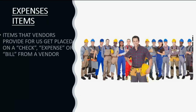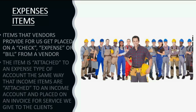Expense items are items that vendors provide for us, and they get placed on a check, expense, or bill from a vendor at the moment we purchase the item. The item is attached to an expense type of account, the same way that income items are attached to an income account and placed on an invoice for service when we give to the clients.